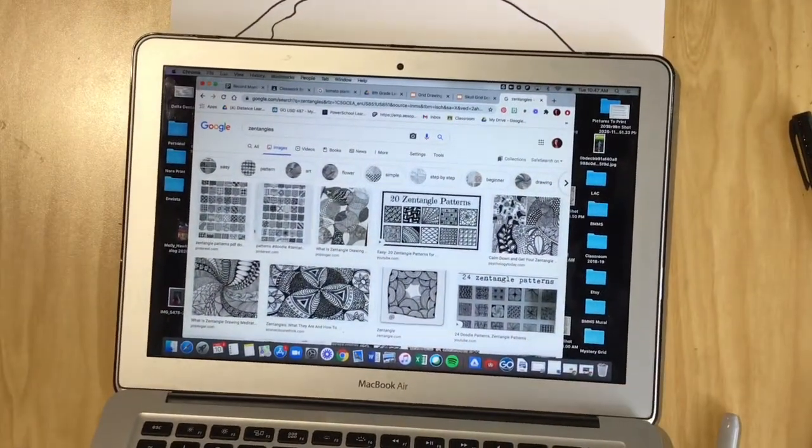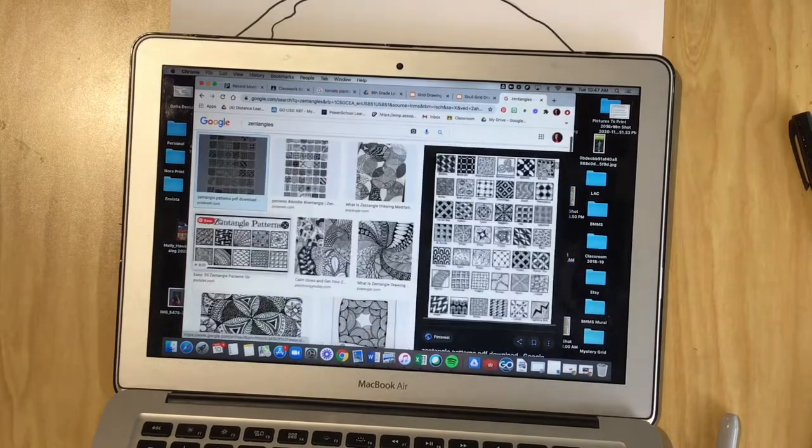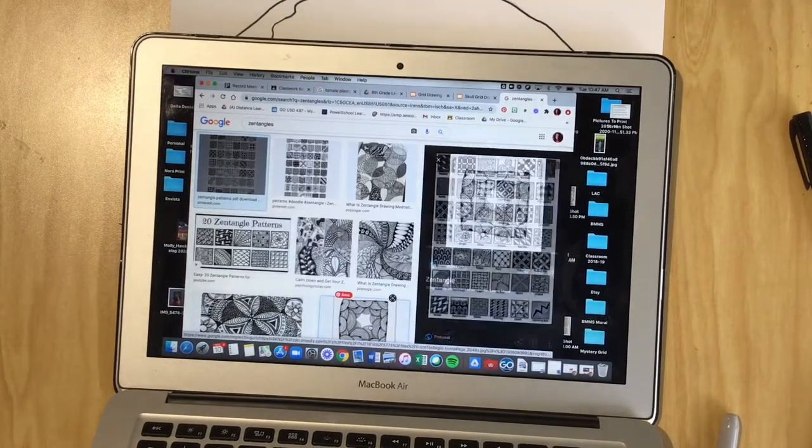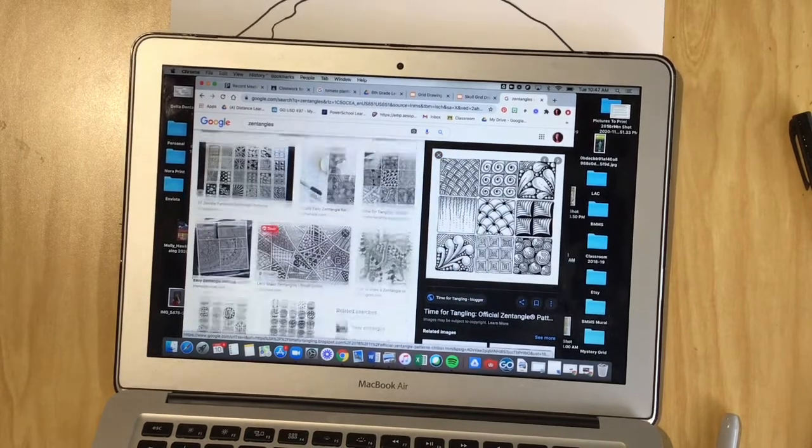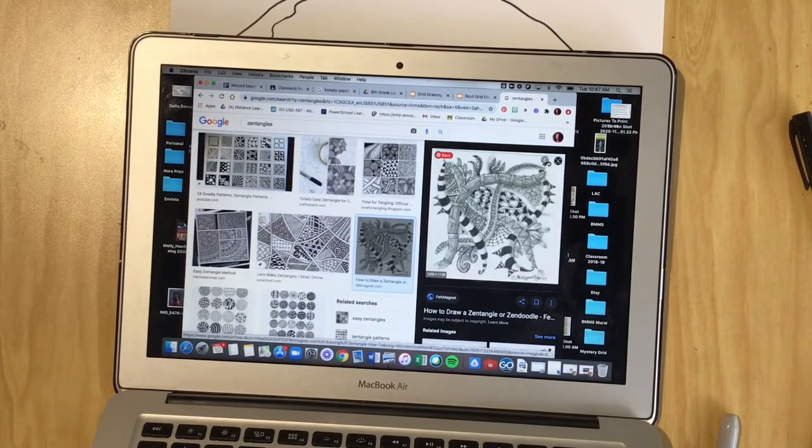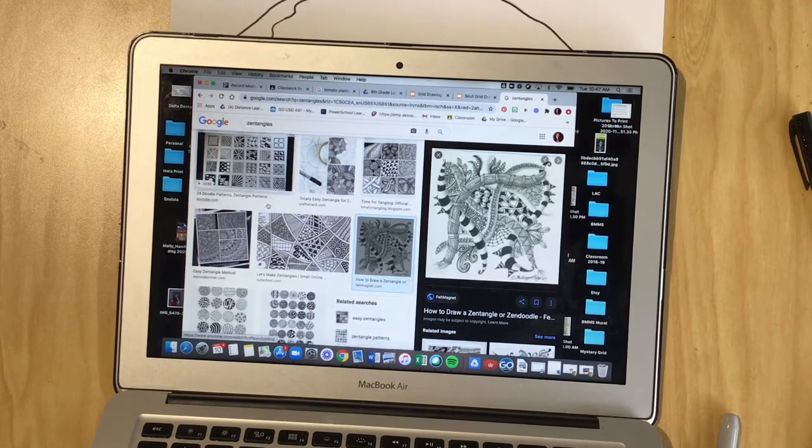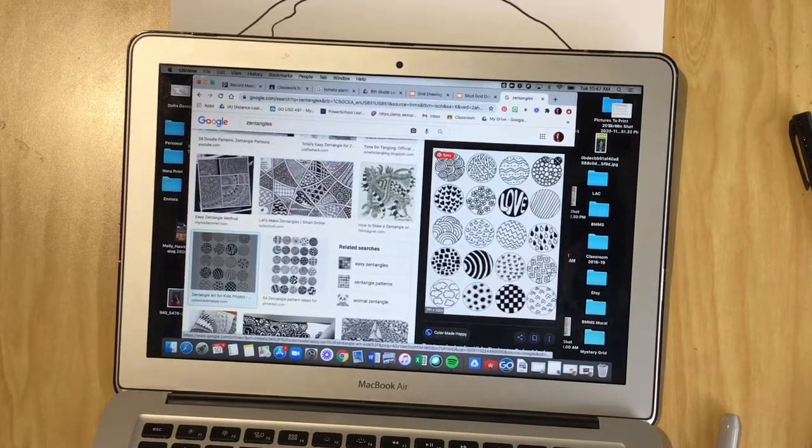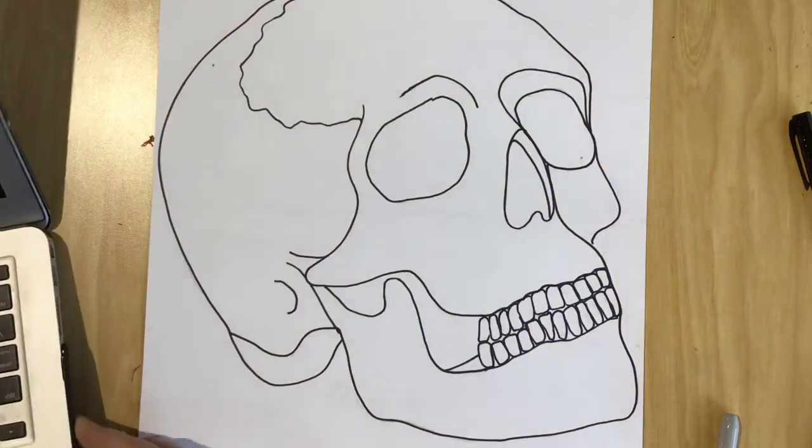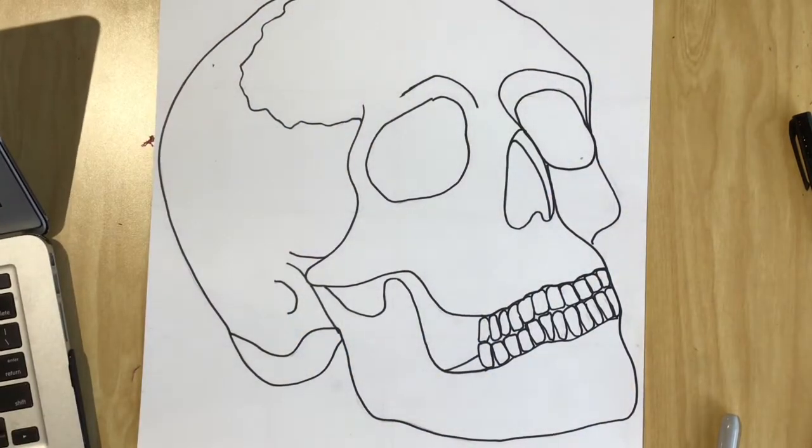So I have Google image searched Zentangle patterns and I can find all kinds of ideas for the types of patterns that I want to incorporate. So a lot of people use Zentangles with Sharpie in these black and white patterns so that's why I'm giving you this option. So when you have your image, you'll want to think about how you could do this.